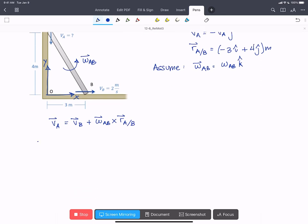We have on the left-hand side minus the scalar VA in the j-hat direction equals 2i meters per second. That's VB plus omega AB the scalar in the k-hat direction crossed with our vector minus 3i plus 4j meters.